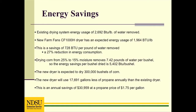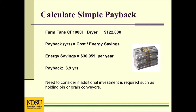The existing dryer has an energy consumption of 2,692 BTUs per pound, and the Farm Fans dryer has an energy consumption of 1,964 BTUs per pound — a 27% energy savings. For drying 300,000 bushels of corn, this will be a savings of 17,691 gallons of propane, which is a $30,959 savings assuming a propane price of $1.75 per gallon. The simple payback period is the cost divided by the energy savings. In this example, the payback period is 3.9 years. Any additional costs such as wet holding bins or drain conveyors must be included in the calculation.